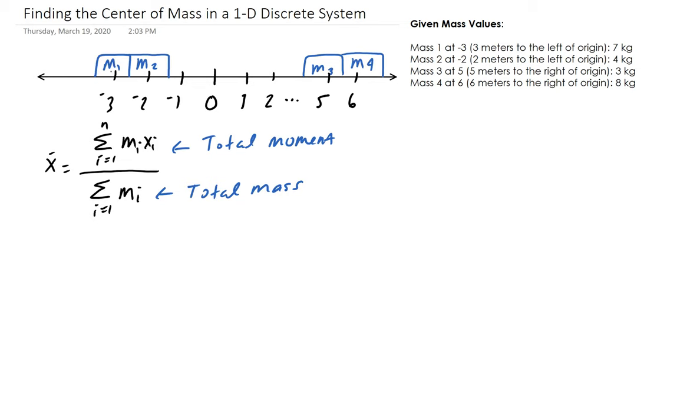For the first mass, you have 7 kilograms located 3 meters to the left, so this is 7 times -3. It's negative because it's three units to the left of the origin. For the second mass, you have 4 kilograms located 2 meters to the left of the origin.